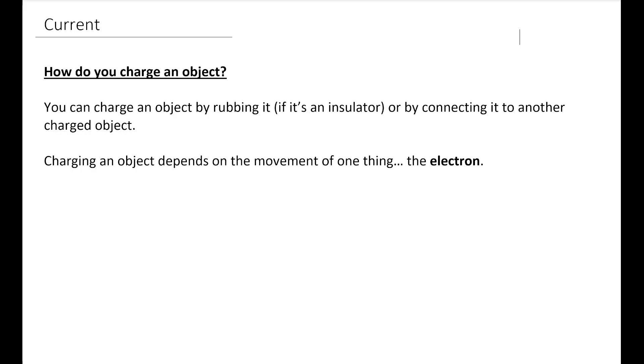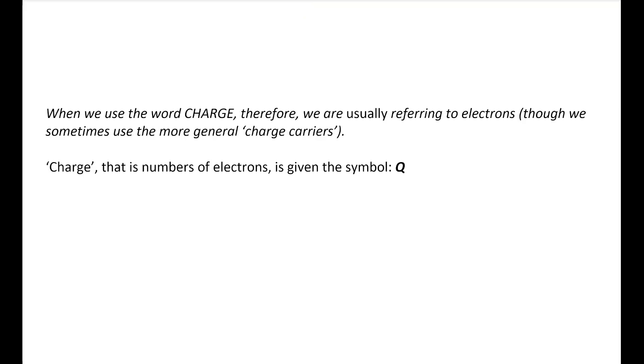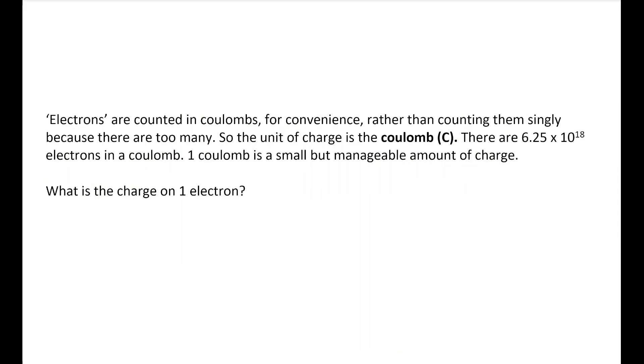But the basis of all of DC circuits is electrons. So we need to understand what we're talking about. So when we use the word charge, we are usually referring in DC circuits to electrons, although oftentimes we will use the more general charge carriers. Because there are situations like electrolysis where current might be caused by the movement of positive ions. So just so we're managing all situations or able to refer to all situations, we call them charge carriers instead. And the quantity charge, which effectively is number of electrons, is given this symbol Q.